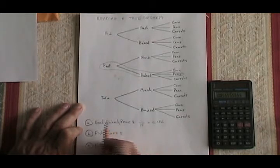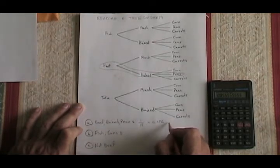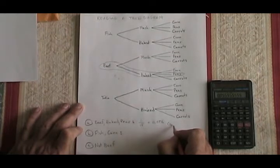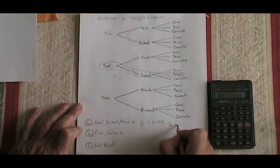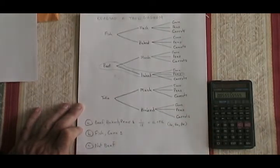We could also represent the beef, baked potato, and peas in what we call an ordered triad, which looks like this. I put BE for the beef, BA for the baked potato, and PE for the peas. That's an ordered triad. It's the only one that satisfies these conditions.